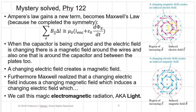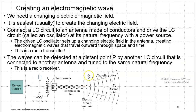As the charge increases, it creates a magnetic field which also increases. To create an electromagnetic wave beyond the parallel plate capacitor, the easiest way is to create a changing electric field. So you build a radio transmitter using an LC circuit — really an LRC circuit, but resistance is kept as low as possible because it wastes energy. You connect an LRC circuit to an antenna made of conductors and drive the circuit at its natural frequency, at resonance with a power source. The driven LC oscillator sets up a changing electric field in the antenna, which creates electromagnetic waves that travel outward through space and time.